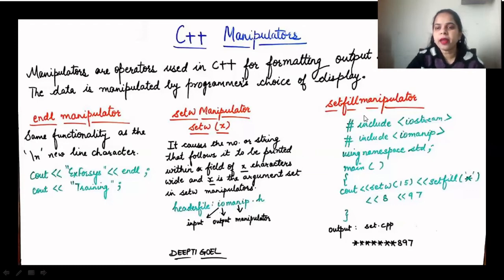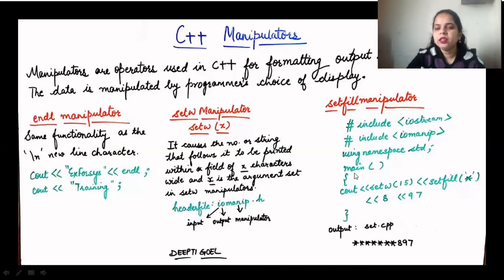The next manipulator is the setfill manipulator. In setfill, we want to fill the spaces — the gap left by setw — with a specific character. For example, we can use star. So if we write setw(15) and setfill('*') with output value 897, it will leave 14 columns and in the 15th column write 897, filling the first 14 spaces with star characters.